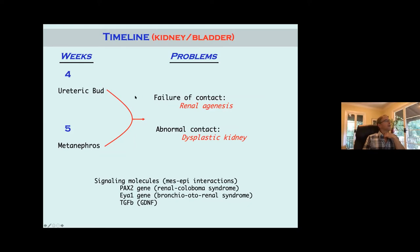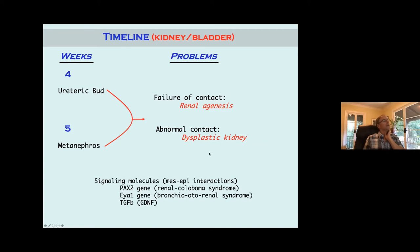There are a couple things that can go wrong with the ureteric bud or with the metanephros. If the ureteric bud doesn't hit the metanephros, you're going to get renal agenesis — the kidney just can't form. If the bud hits the metanephros but there's abnormal contact, you'll get some form of a dysplastic kidney. These signaling molecules are super important; you need these mesenchymal-epithelial interactions in order for the kidney to develop correctly.